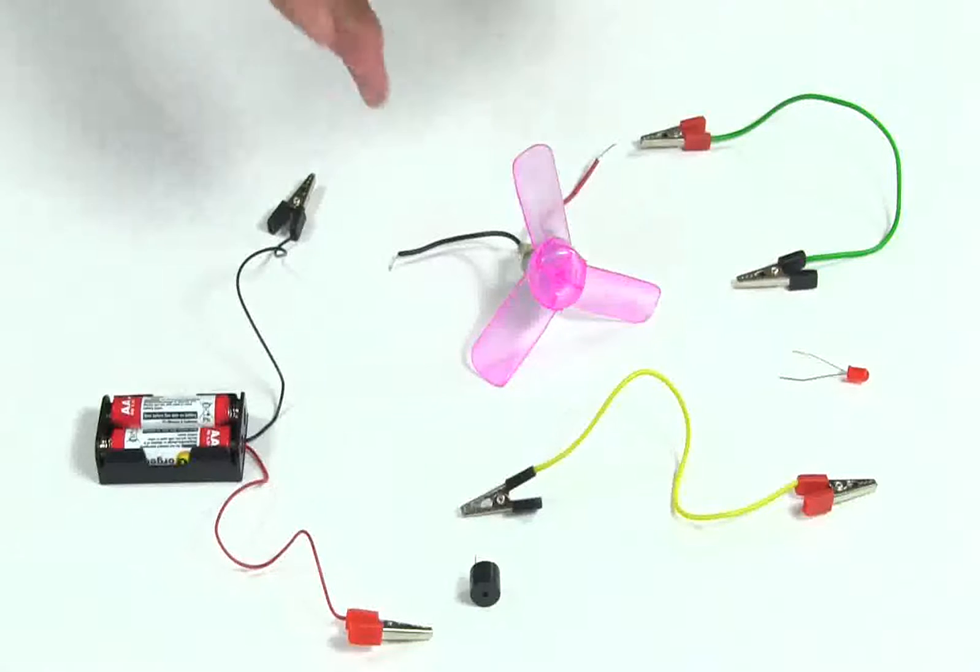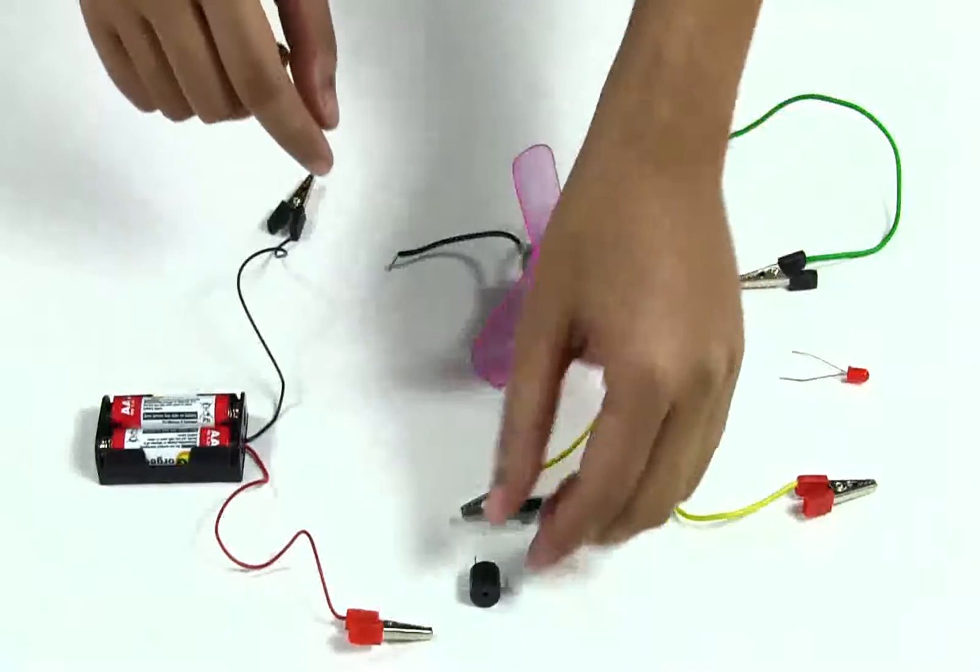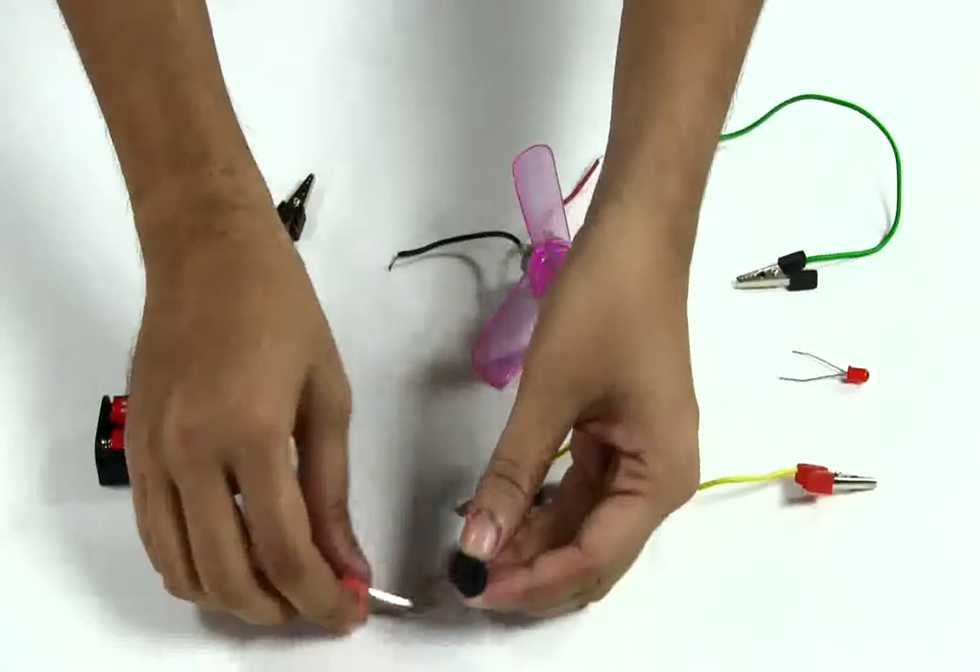In this experiment, we're going to see how we can make a series connection. A series connection has only one loop, so the same current flows through all the elements in series. For example, I am attaching this battery to this buzzer.